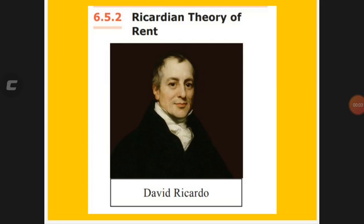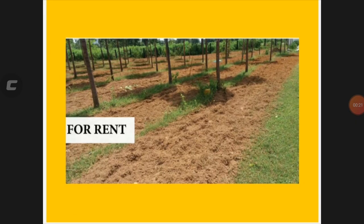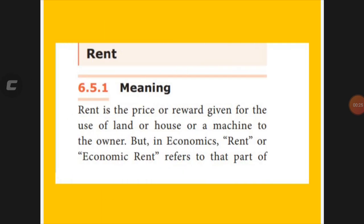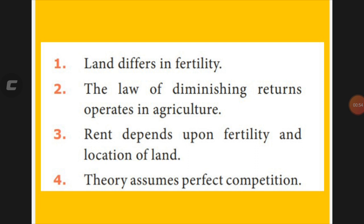Good morning. We will continue with Chapter 6, Standard Economics. The next topic is rent. Rent theory was given by the economist David Ricardo. Rent means when you are using any land, the payment made to the landowner in the form of a price or reward is called rent. In economic terms, when a tenant uses full land or part of land, the payment to the landlord is called rent.